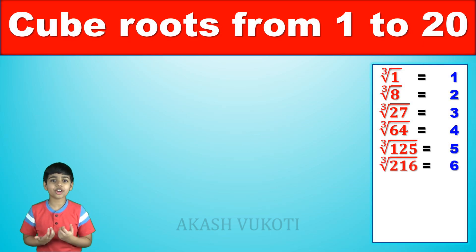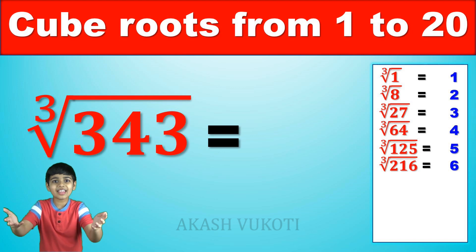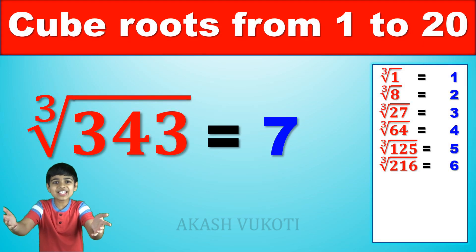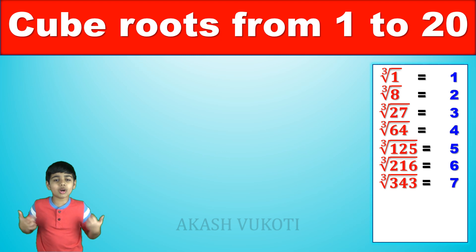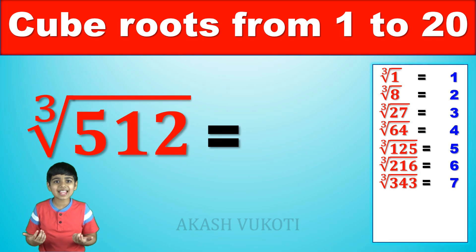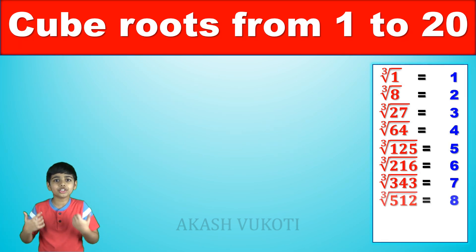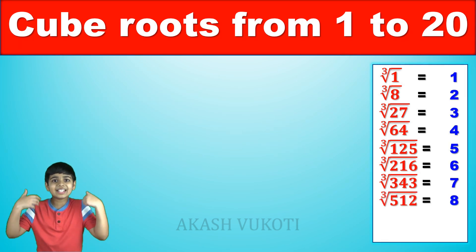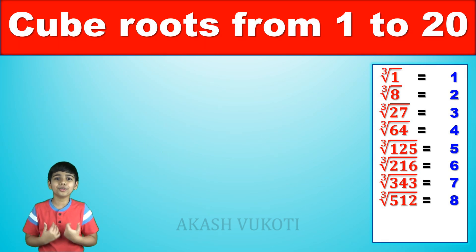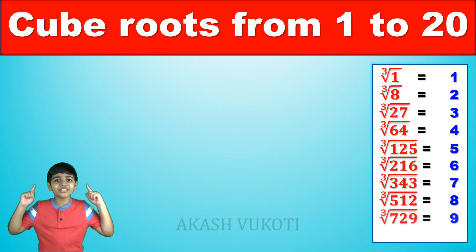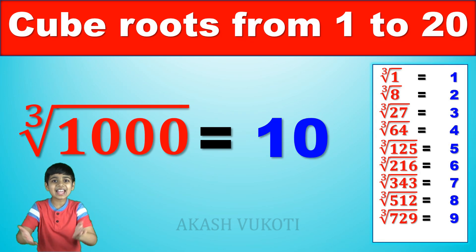The cube root of 343 is 7. The cube root of 512 is 8. The cube root of 729 is 9. The cube root of 1,000 is 10.